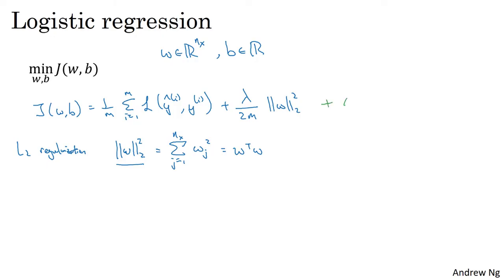Why don't we add something about B as well? In practice, you could, but I usually omit this because W is usually a pretty high-dimensional parameter vector, especially with a high variance problem. W has a lot of parameters, whereas B is just a single number. So almost all the parameters are in W rather than B. Adding this last term won't make much difference in practice since B is just one parameter out of a very large number.